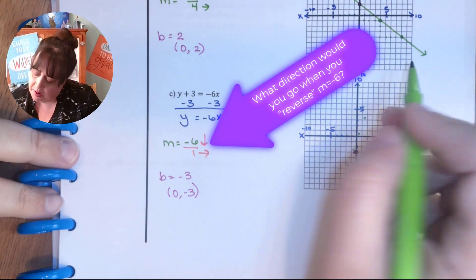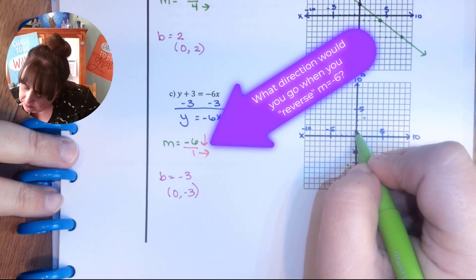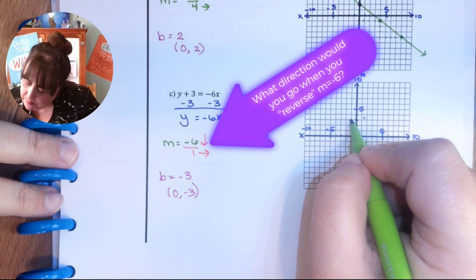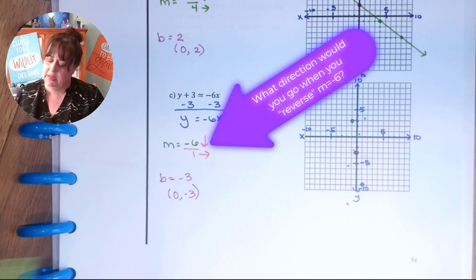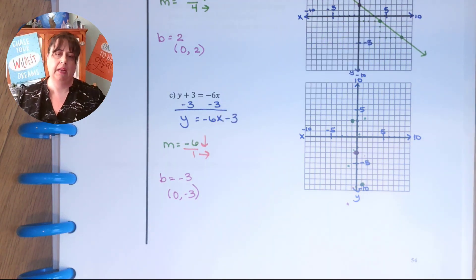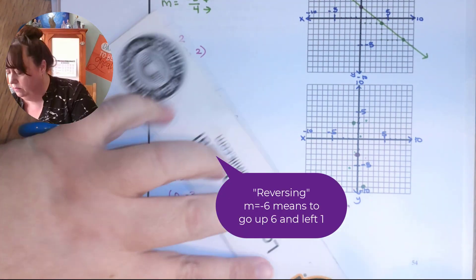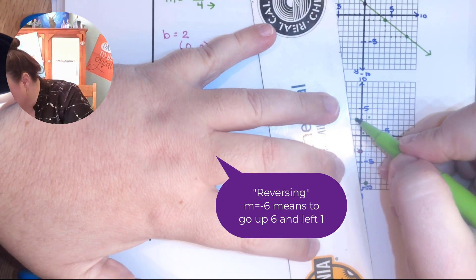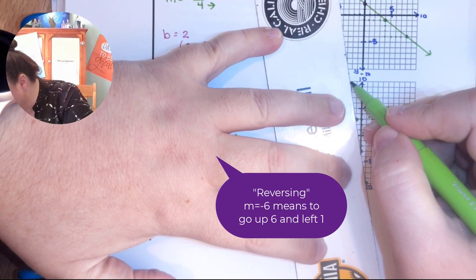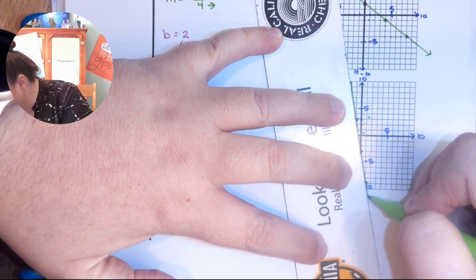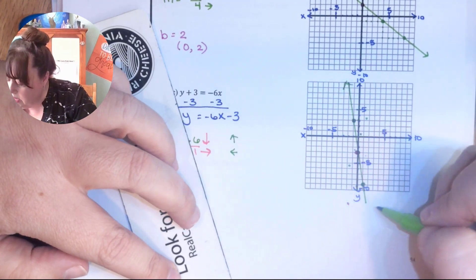It's a very steep graph. 1, 2, 3, 4, 5, 6 and backwards 1 because I reversed it. It was so steep. I decided I wanted another point. I couldn't go this way. So I reversed it. Super steep graph.